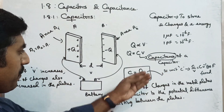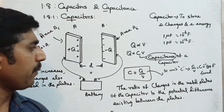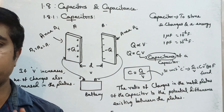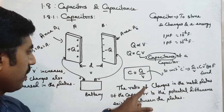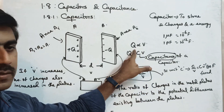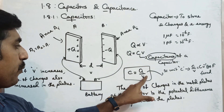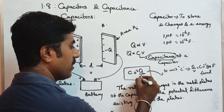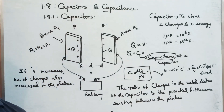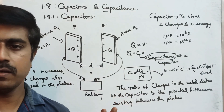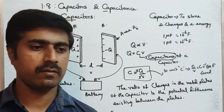Capacitance is one of the characteristics of a capacitor. When the potential difference is two times increased, the charges also increase two times. Capacitance is always constant - it acts like a water storage device.